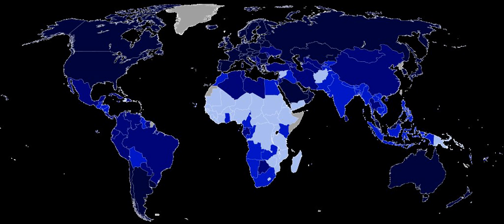The 2010 Human Development Index, published on 4 November 2010 and updated on 10 June 2011, combines three dimensions: a long and healthy life measured by life expectancy at birth; an Education Index combining mean years of schooling and expected years of schooling; and a decent standard of living measured by GNI per capita in PPP US dollars.